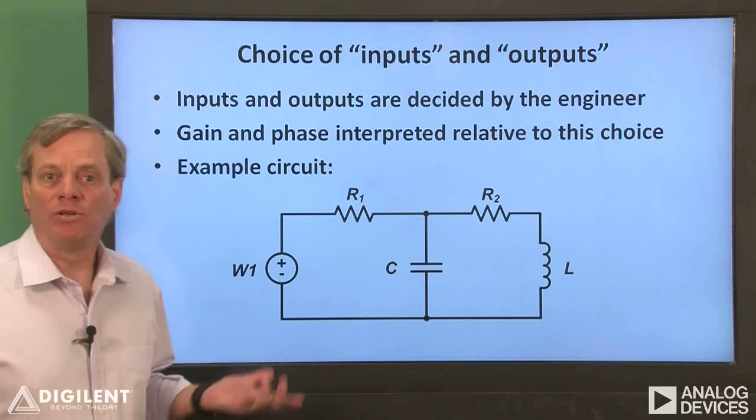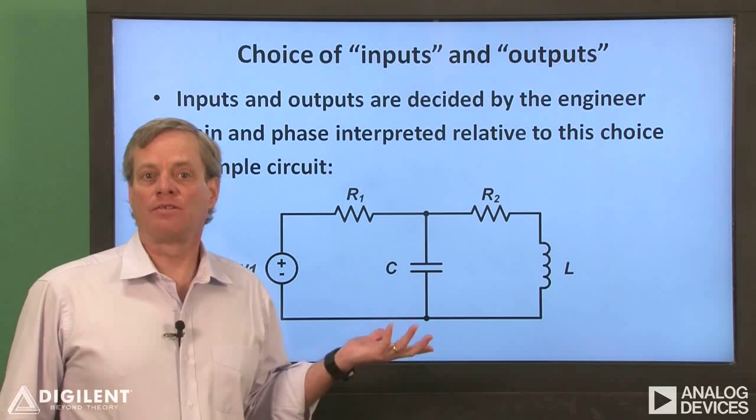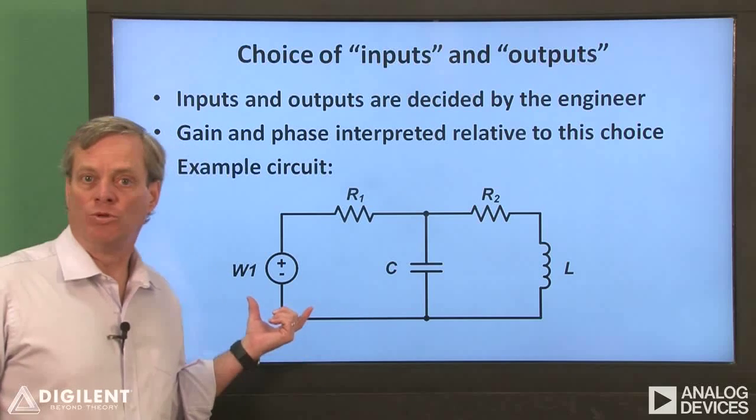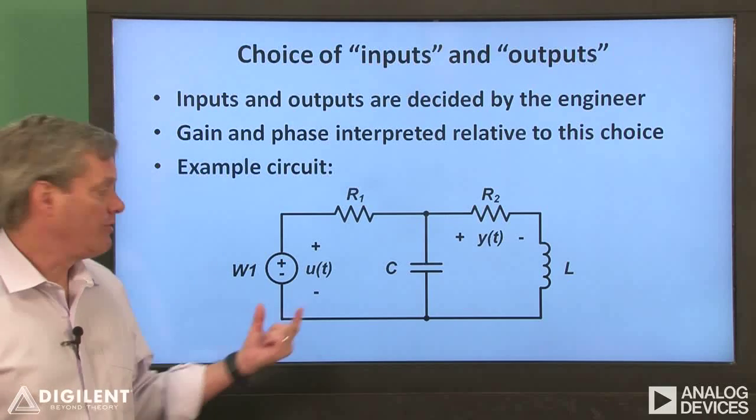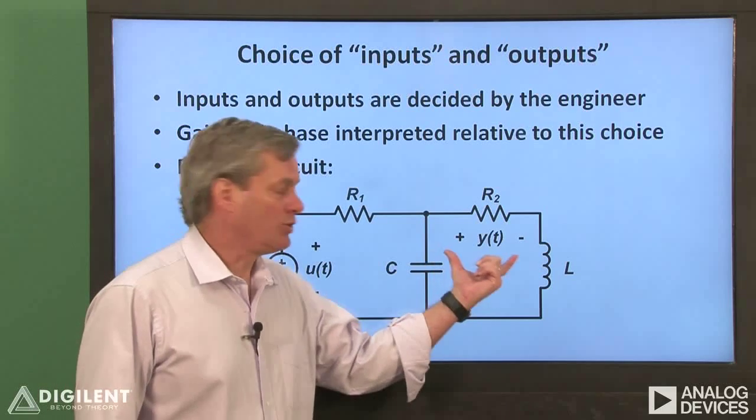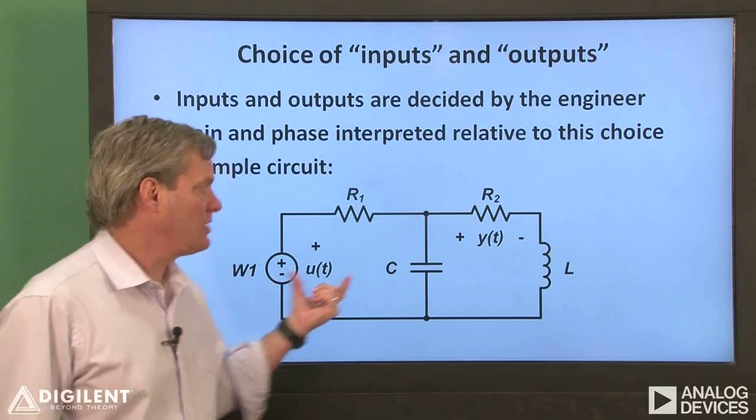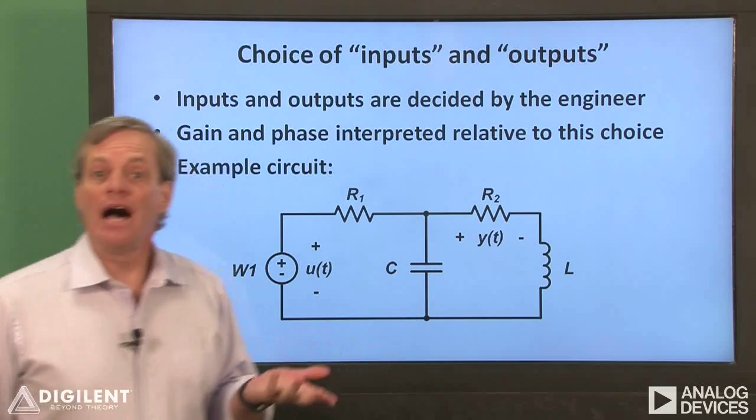As an example, let's look at this circuit. We have a source in our circuit, so one possible obvious choice of input function would be the voltage across this source. If we choose this as our input and rather arbitrarily choose the voltage across this resistor as our output, our gain and phase will represent the relationship between these two parameters. However, this choice of input and output parameter is not unique.